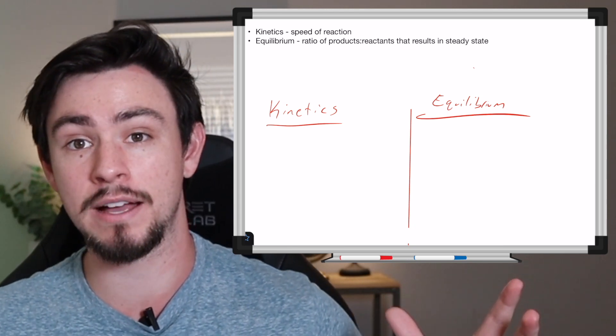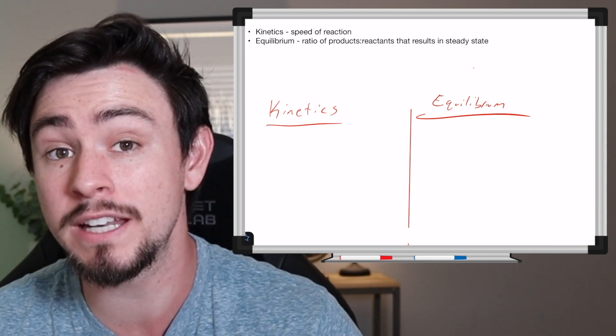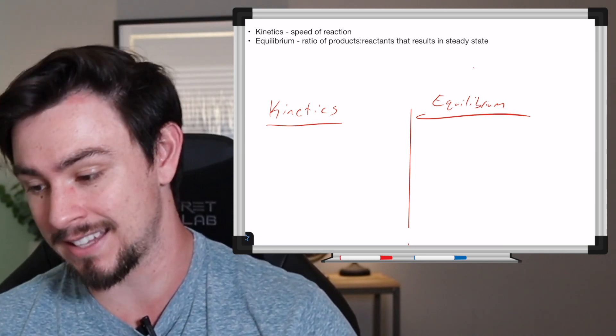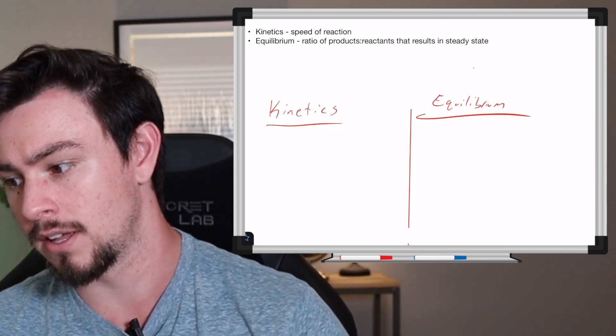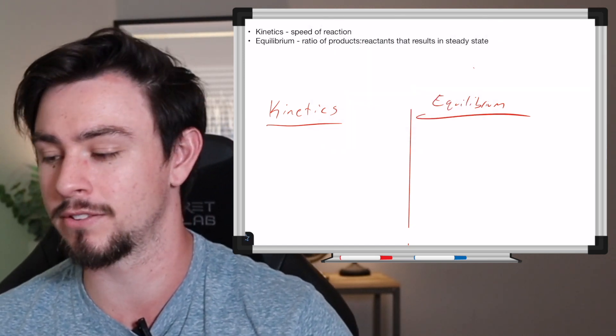Before we start talking about Michaelis-Menten kinetics and enzyme kinetics in general, it's important that we discuss the distinction between kinetics and equilibrium because there is a distinct distinction and it is frequently tested on the MCAT. So let's go ahead and look at the whiteboard and talk about exactly what that distinction is. So here I've got typed out some really brief generic definitions. Kinetics is kind of the speed of the reaction and equilibrium is the ratio of products to the reactants that results in steady state. Now that's very buzz wordy so let's kind of walk through it so that it makes a little bit more sense.